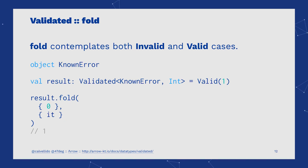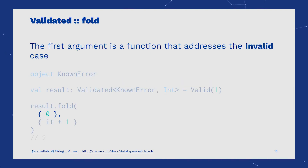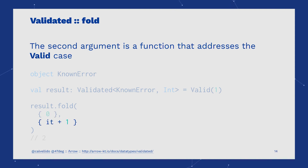An easier way to deal with this case is using fold. Fold allows us to pass two functions. The first function addresses the Invalid case — here, we are saying that if we find a known error, we should return zero. The second argument is a function that addresses the Valid case, where we have the chance to transform the inner contents of Valid.